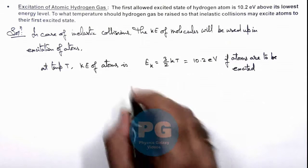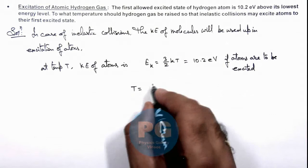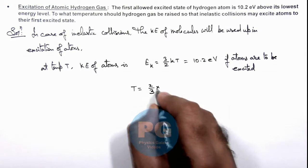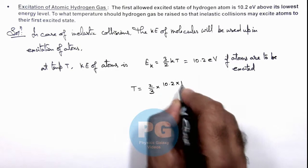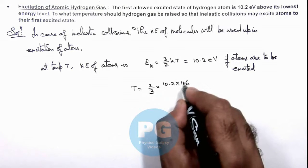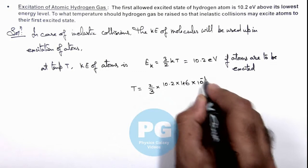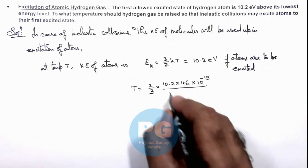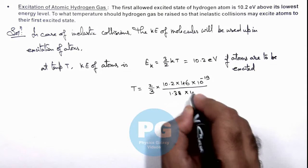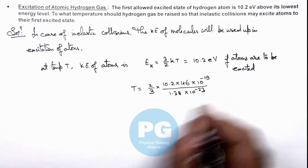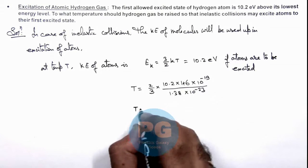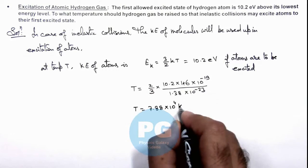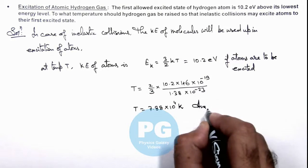In this situation the temperature of gas can be given as T = 2/3 multiplied by 10.2 × 1.6 × 10^-19 divided by k which is 1.38 × 10^-23. On simplifying, the value of temperature we are getting is 7.88 × 10^4 kelvin. That is the result of this problem.